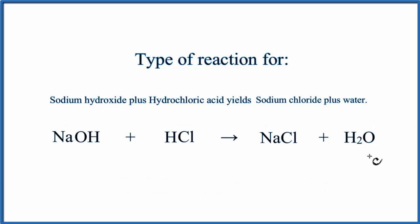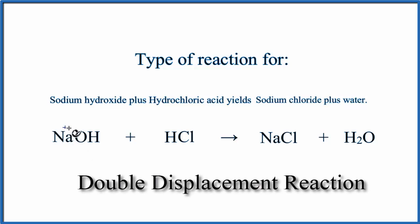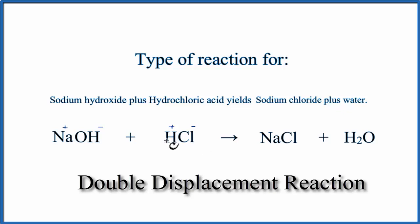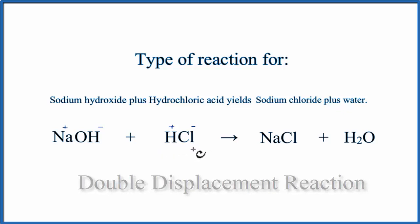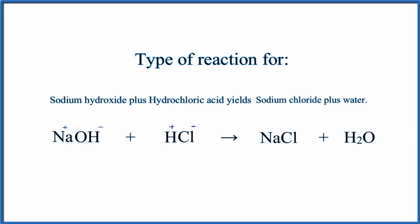The other type of reaction is called a double displacement reaction. For sodium, it has a positive charge, and the hydroxide ion is negative. Hydrogen is in group one, so it's positive, and chlorine has a negative charge. In a double displacement reaction, the positives switch places — or if you like, the negatives switch places.